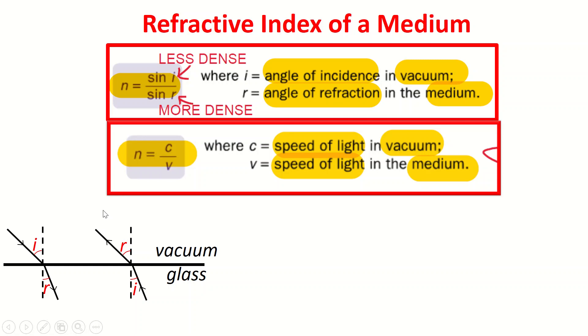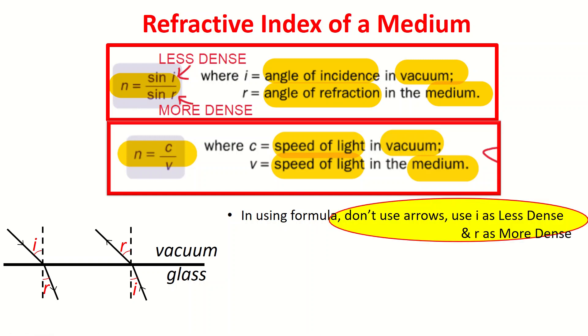My first key takeaway is this. When you are using this formula, sin i over sin r, don't use the arrows. In other words, when I am looking at i, don't just look for i as my incidence, because if you are looking at i as my angle of incidence you will only be correct half the time.